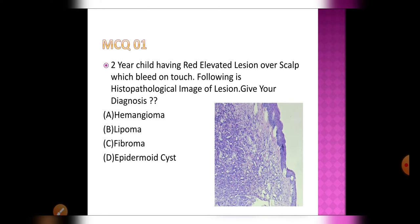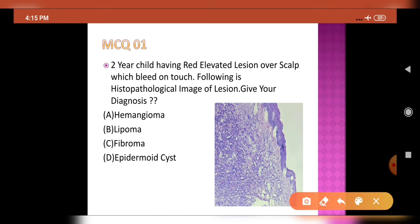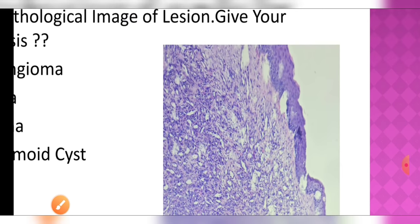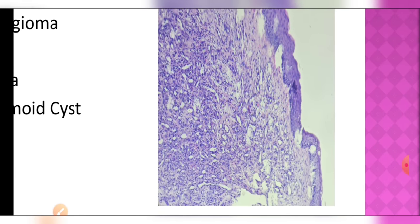Let's start with the first MCQ. A two-year-old child has a red elevated lesion over the skull which bleeds on touch. Following is the histopathological image of the lesion — give your probable diagnosis. Three important hints: the lesion is red, meaning it is a vascular lesion, and it bleeds on touch, suggesting a vascular origin.